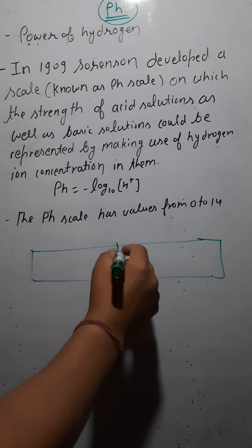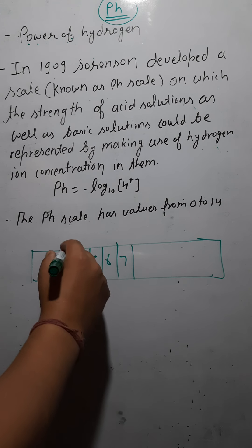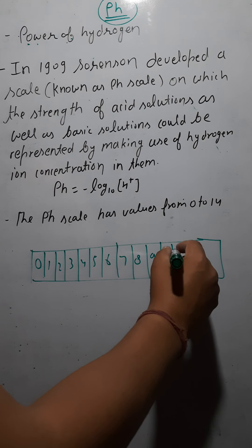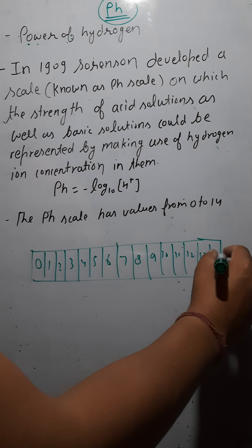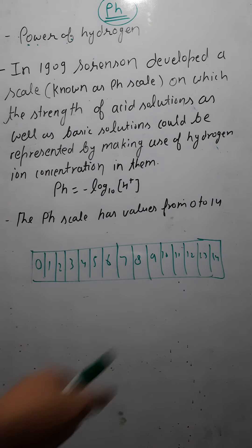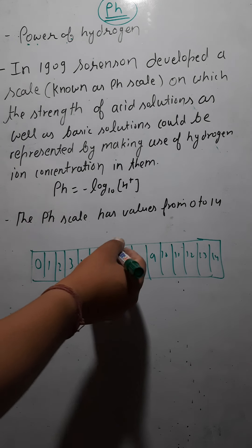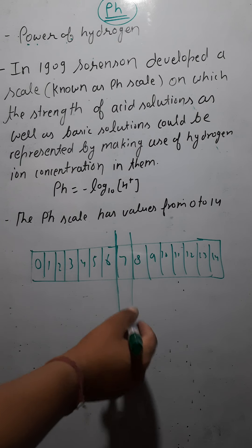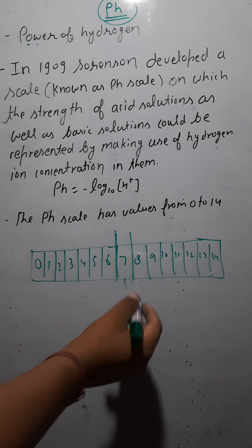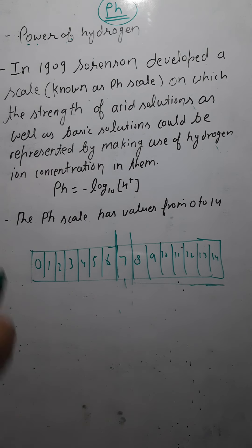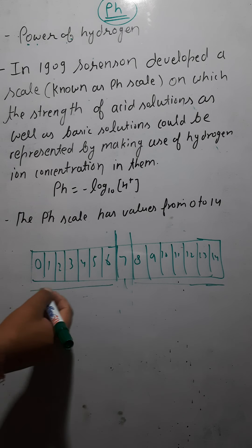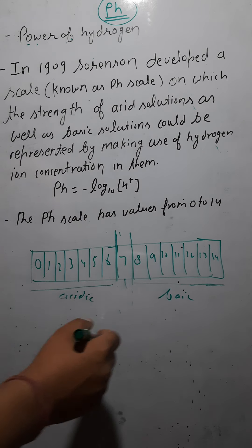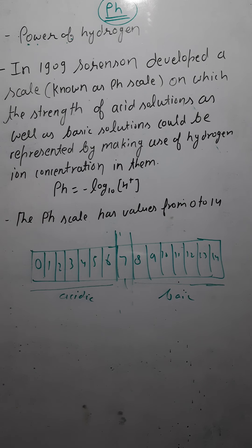On the pH scale, values go from 0 to 14, with 7 in the middle. The solution having pH value of exactly 7 is considered neutral. Solutions with pH more than 7 are basic solutions, and solutions with pH less than 7 are acidic solutions.